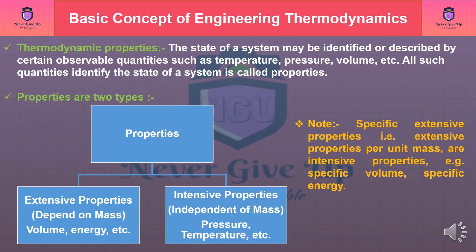Thermodynamic properties: The state of a system may be identified or described by certain observable quantities such as temperature, pressure, volume, etc. All such quantities that identify the state of a system are called properties. Properties are of two types. Extensive properties: Those properties which depend on mass, for example volume, energy, etc. Intensive properties: Those properties which do not depend on mass, for example pressure, temperature, etc.